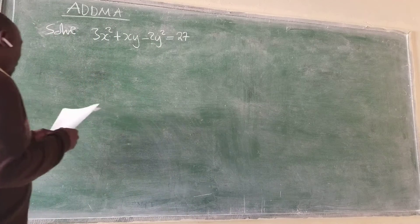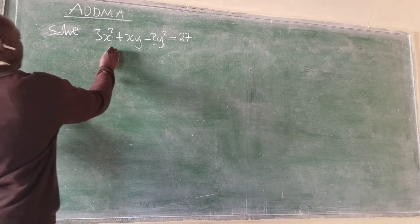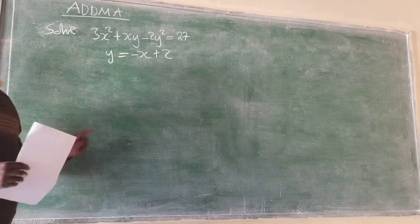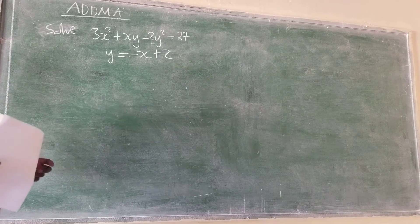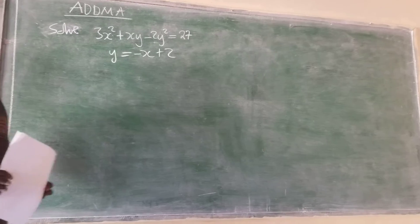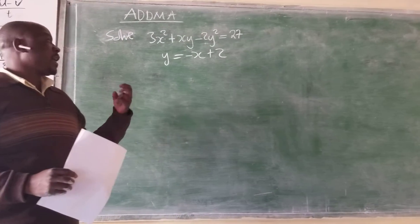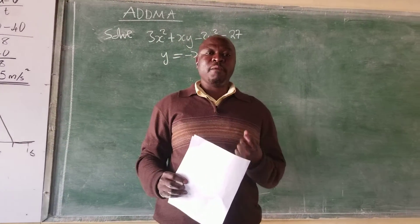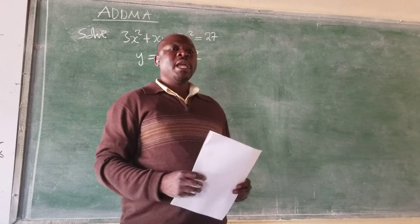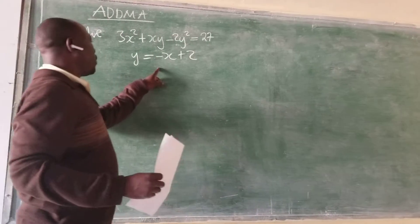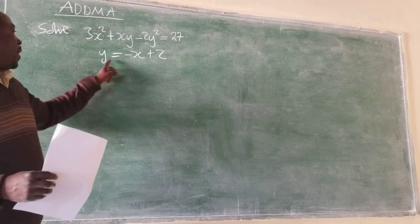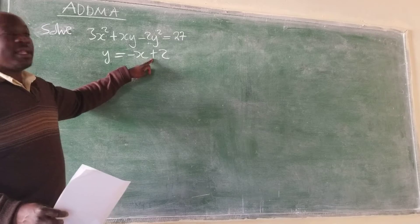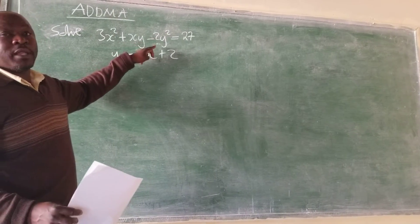So I have a problem here: solve the equation, where y is equal to negative x plus 2. When solving such equations, there are two equations here. You take one equation, make one variable the subject of the formula, and then substitute it into the second equation. Here, the second equation already has y as the subject of the formula.